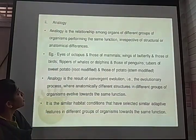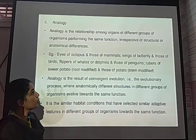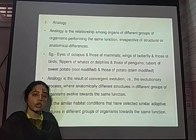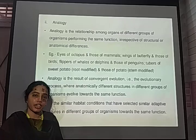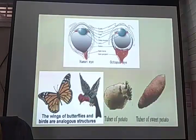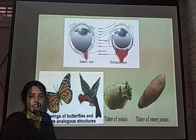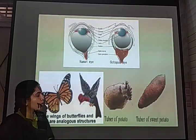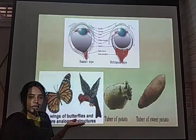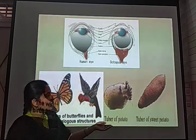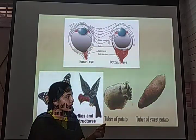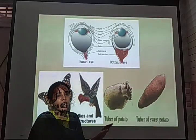Analogy is the relationship among organisms of different groups performing the same function irrespective of structural and anatomical differences. Analogous organs have different origins but perform the same function. For example, the eyes of an octopus and human beings originated differently but both function for vision. The wings of birds and insects have different origins but both serve for flying. The tubers of potato and sweet potato originated differently — one is stem modification and the other is an adventitious root — but both perform the function of food storage.